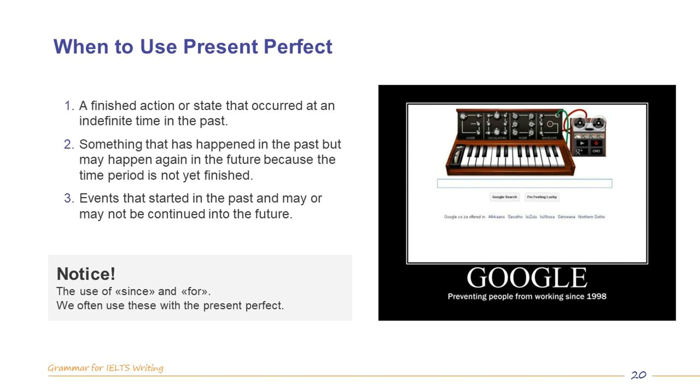Number two, something that has happened in the past but may happen again in the future because the time period is not yet finished. In each of these situations, there is a time period that is still continuing. Today, this morning, this afternoon, and although the actions have already occurred, they may be repeated again. For example, in the first sentence, it has already rained, but it might rain again.